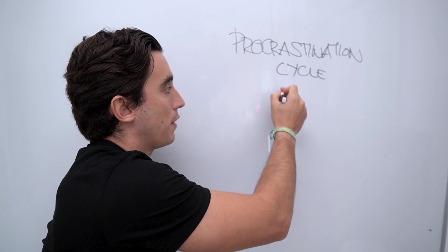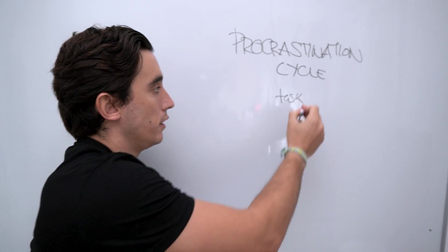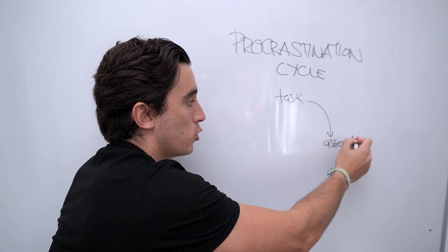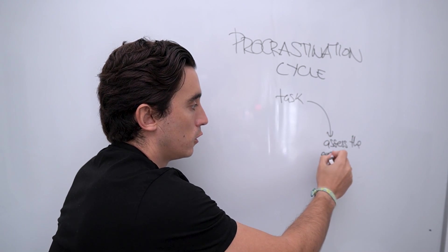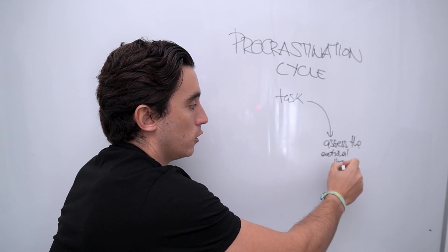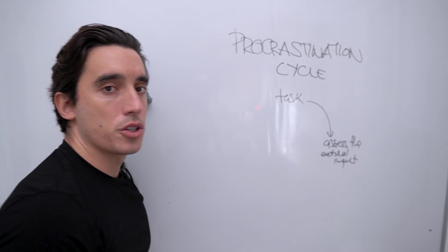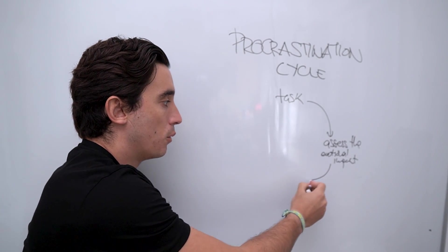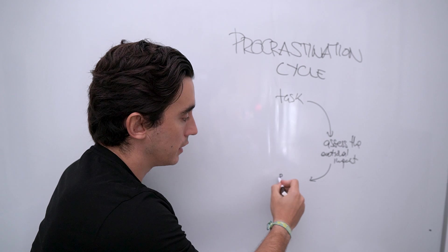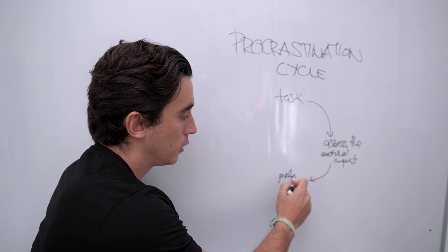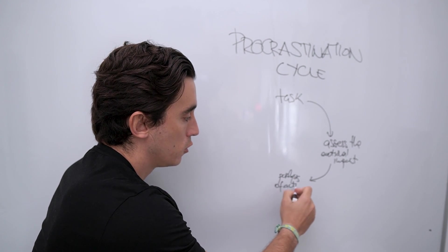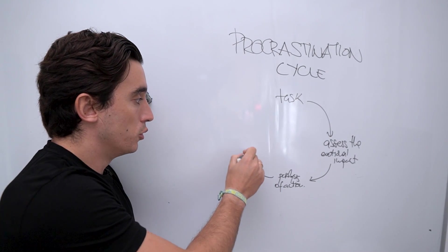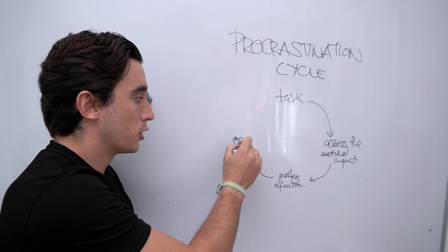The procrastination cycle goes a little bit like this. So first, you have the task, then the brain assesses the emotional impact, and this happens subconsciously. You don't decide on assessing the emotional impact, it's something that just typically happens. And what that leads to is paralysis. Paralysis of action. You do not procrastinate, you procrastinate, and you don't do it, which leads to procrastination on the task.